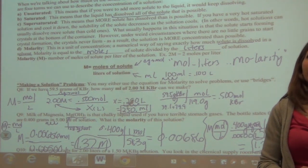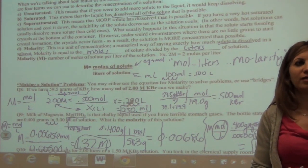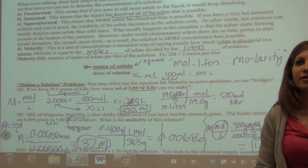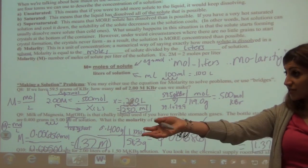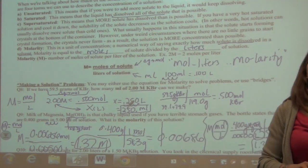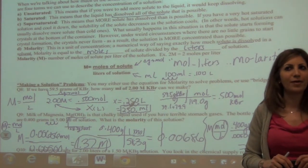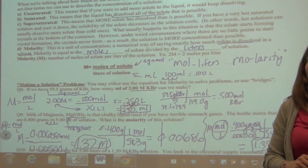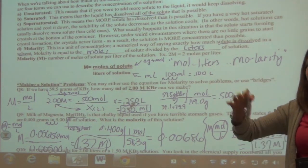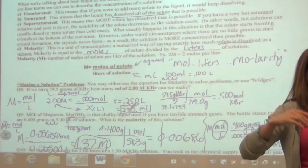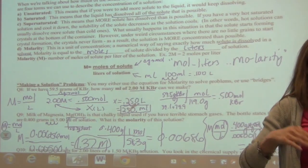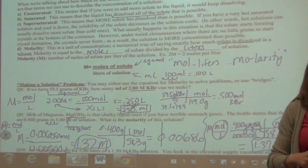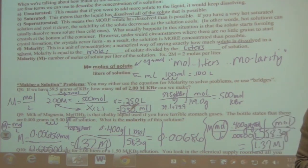How could you increase the concentration? Add more of the powder — which is the solute. Or, if you had no more powder, you could boil some of the water off. If you can get the water to evaporate, you can get a more concentrated solution back.